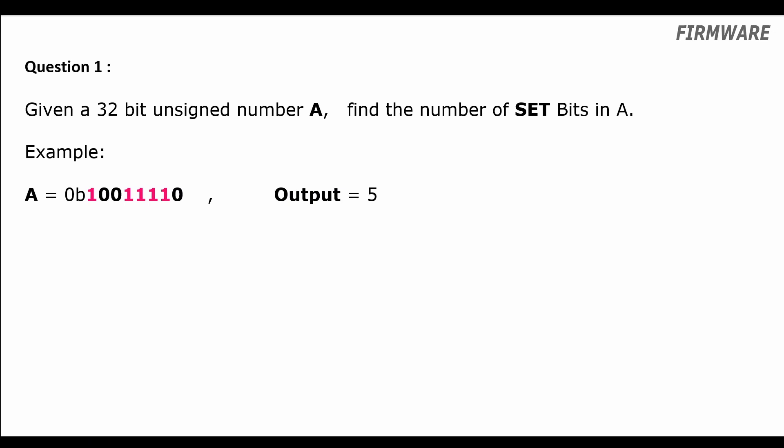Hey guys, what we're gonna solve today is one of the most used functions in real product codebases. The problem is: we have a 32-bit variable A and we want to count the number of bits in A which are 1. If you want to try coding this problem yourself, try to minimize the number of iterations that the loop in your solution makes. Please pause this video and start coding.